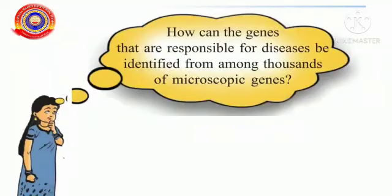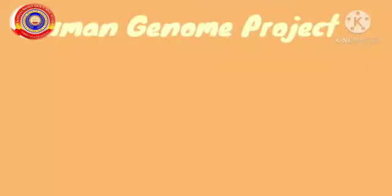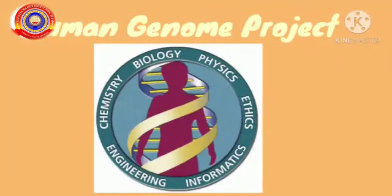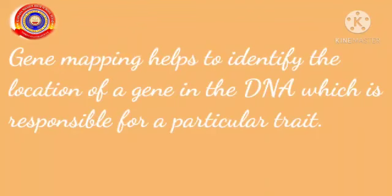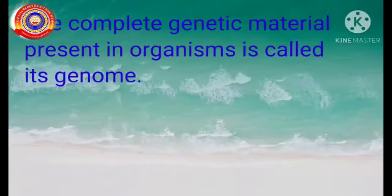Now look at Tara's doubt: How can the genes responsible for diseases be identified from among thousands of microscopic genes? The answer is through the Human Genome Project. The technology known as gene mapping helps identify the location of genes in the DNA that are responsible for a particular trait. The complete genetic material present in an organism is called its genome.